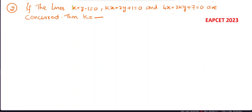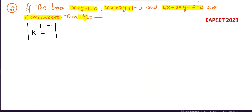The second question: if the lines x + y - 1 = 0, kx + 2y + 1 = 0, and 4x + 2ky + 7 = 0 are concurrent, then the value of k is — concurrent means the determinant of coefficients is equal to zero. The determinant is: row 1: (1, 1, -1), row 2: (k, 2, 1), row 3: (4, 2k, 7), set equal to zero.